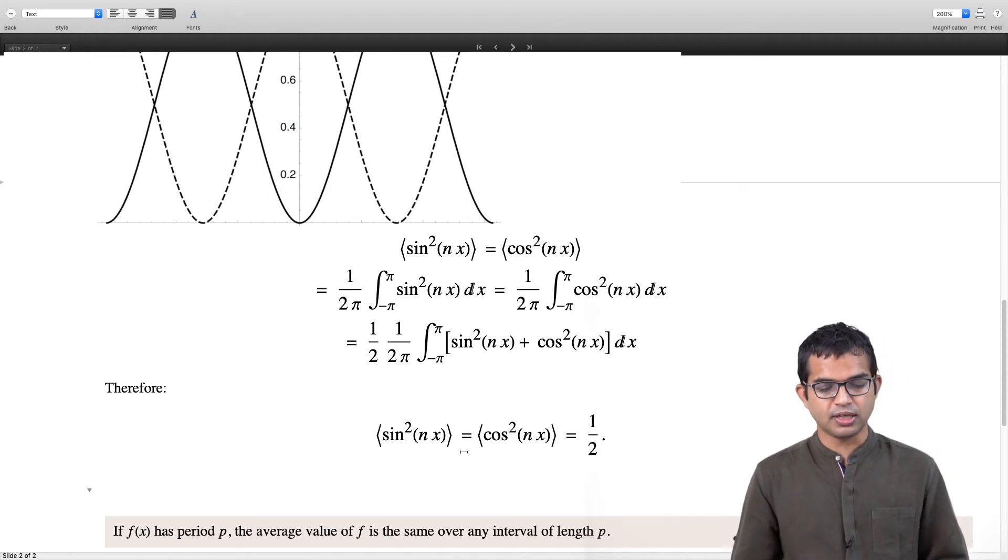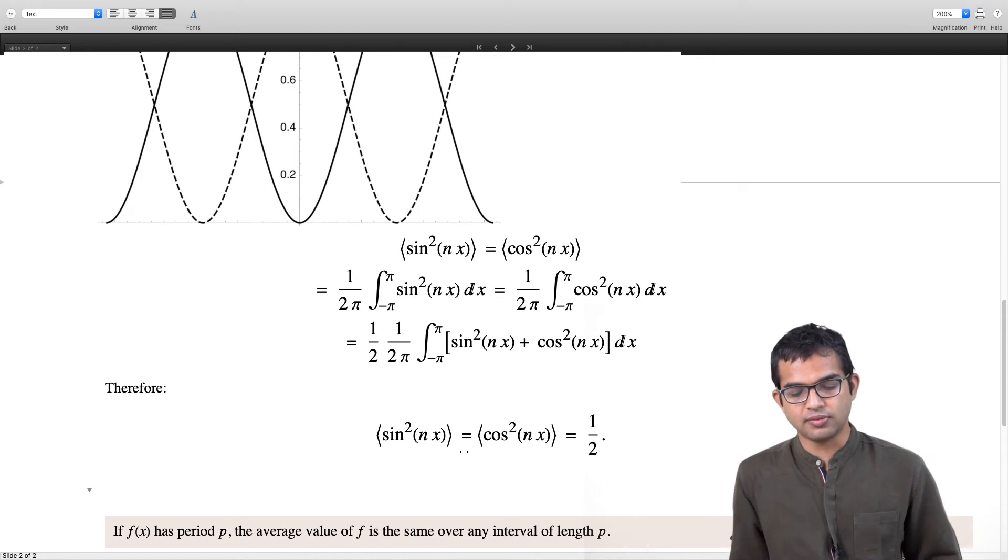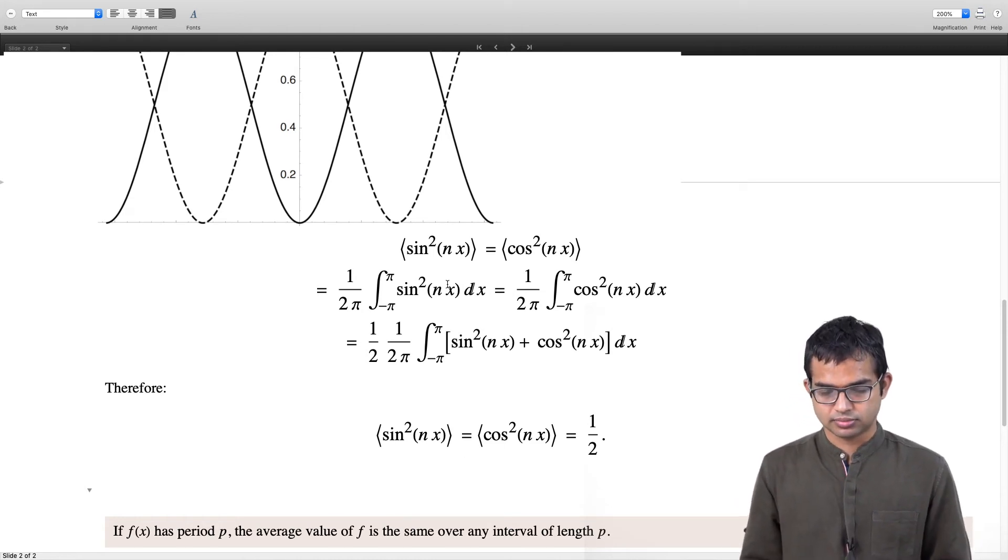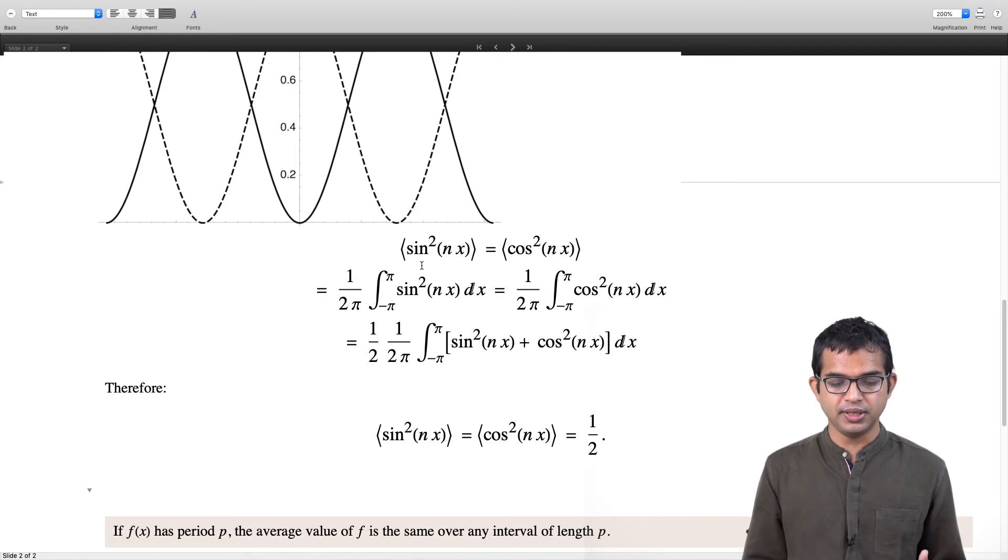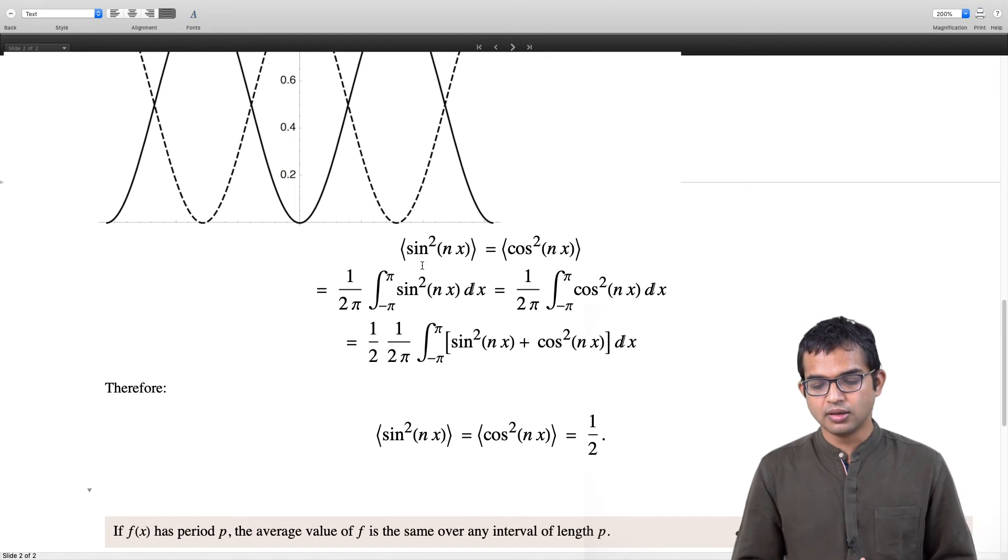Let me give you a more general argument. If you have a function which has some period p, the average value of f is the same over any interval of length p. If you have an arbitrary periodic function with period p, the average value of this function f is the same no matter which interval of length p you consider.